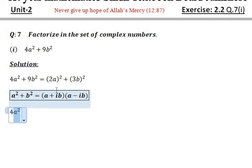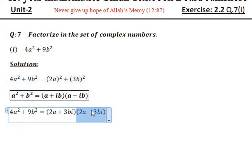Okay. So according to the formula, here a means 2a and b means 3b. Okay. So according to the formula a + ib, that's why 2a + 3bi. Similarly, 2a - 3bi. Okay.